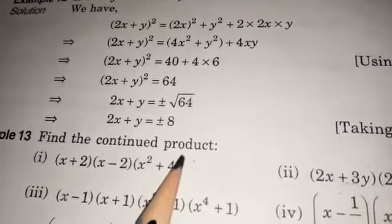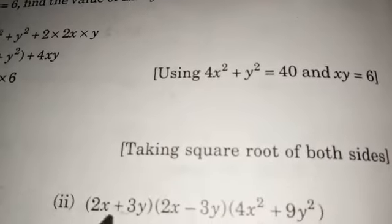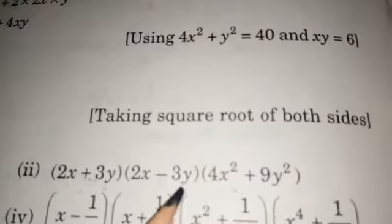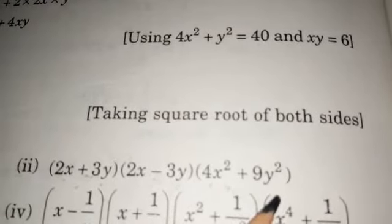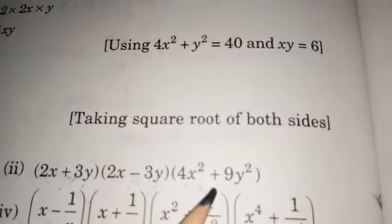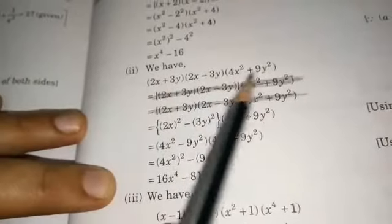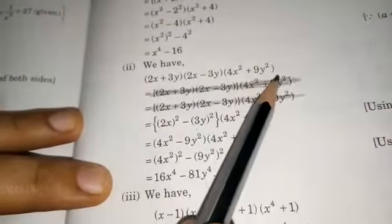Find the continued product. We need to find (2x + 3y)(2x - 3y)(4x² + 9y²). So we have three binomials. We need to find the product of these three binomials. This is what is given to us.